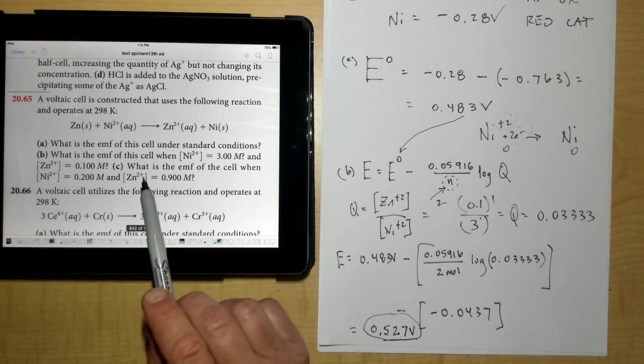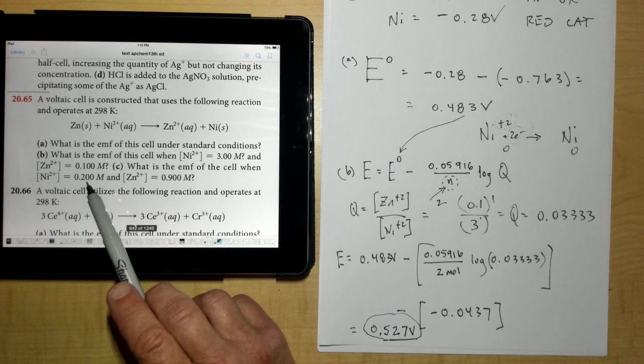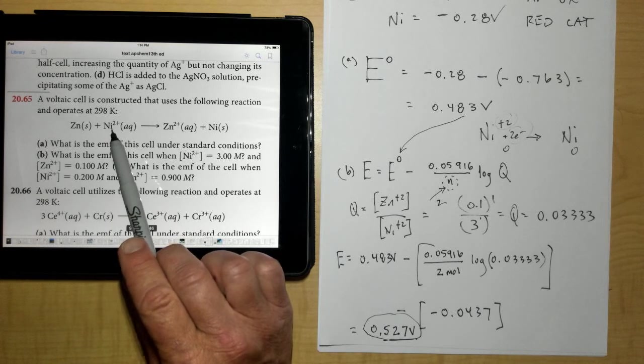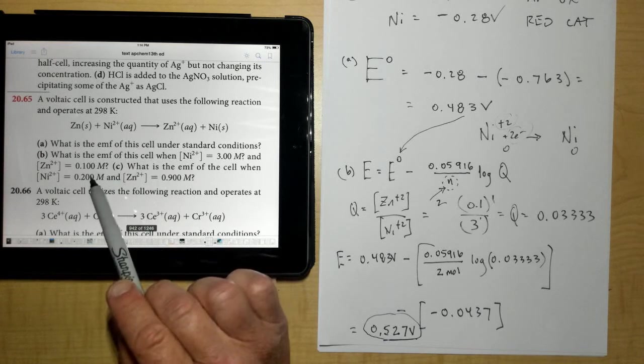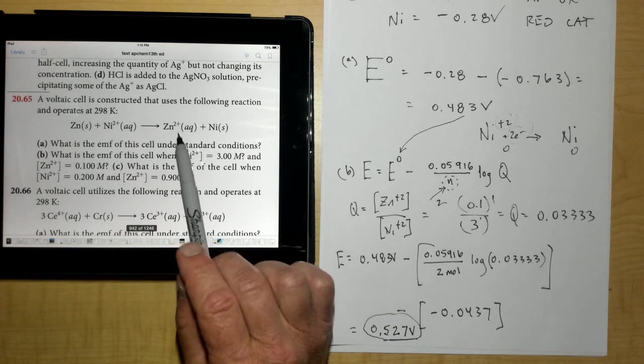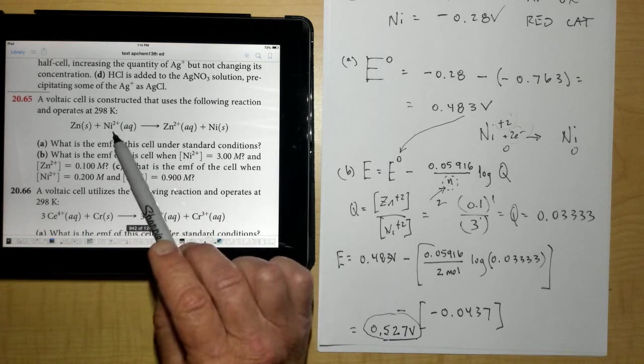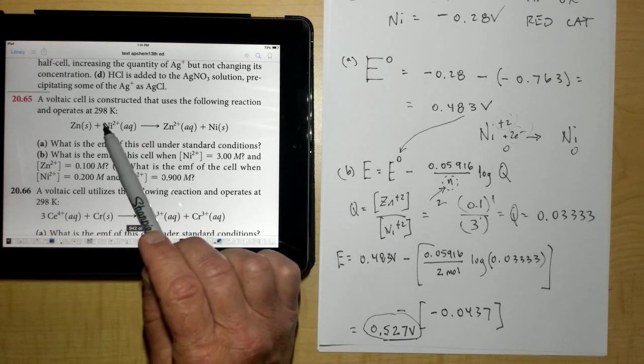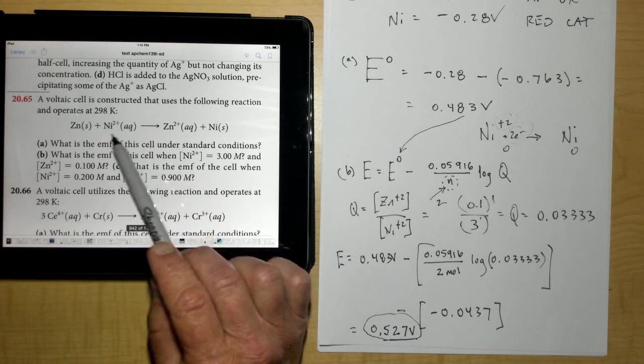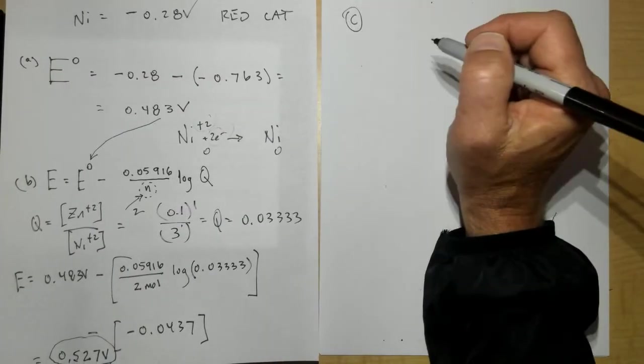So let's make a qualitative prediction about letter C right here. What would be the EMF of the cell when nickel is 0.2? So now nickel, standard conditions would be 1 molar, goes to 0.2. So it goes down. And zinc is 0.9. So that went down a little bit as well. But you can see that nickel went down even more. And so my guess would be is that the reaction would be driven to the left just a little bit. And so my voltage should be less. Let's do the calculations here really quick and see if that turns out to be true.